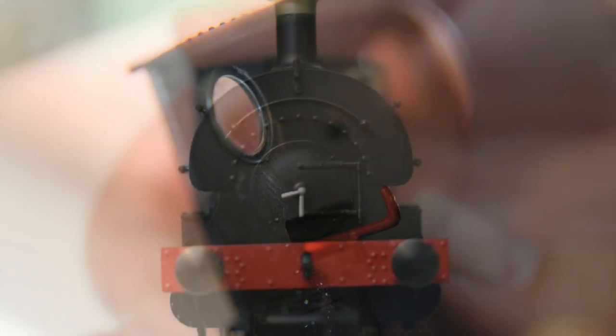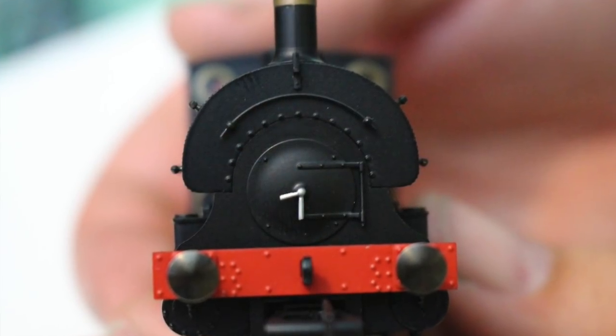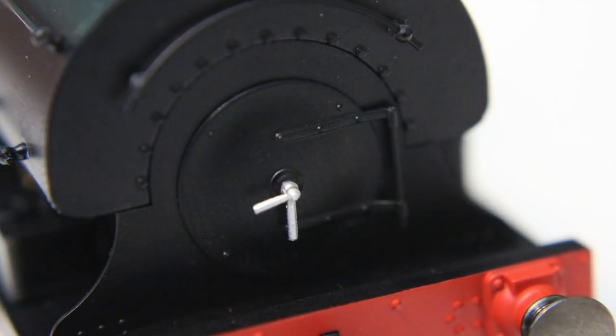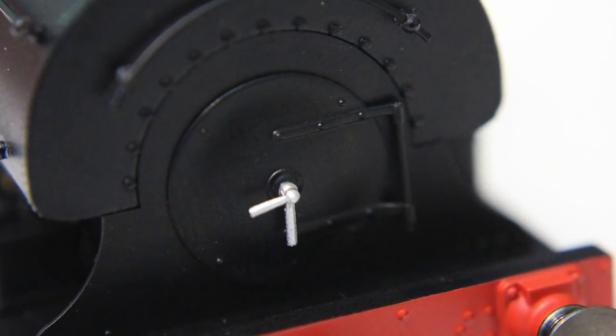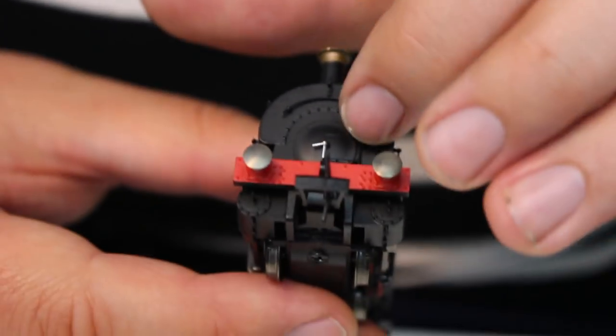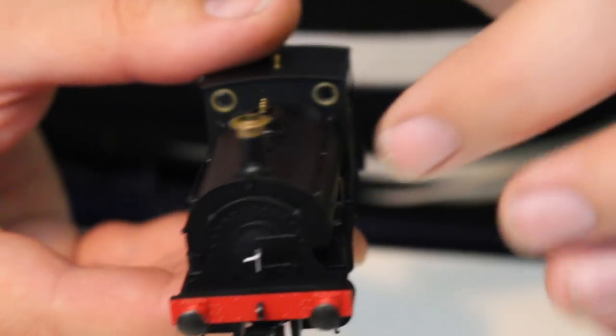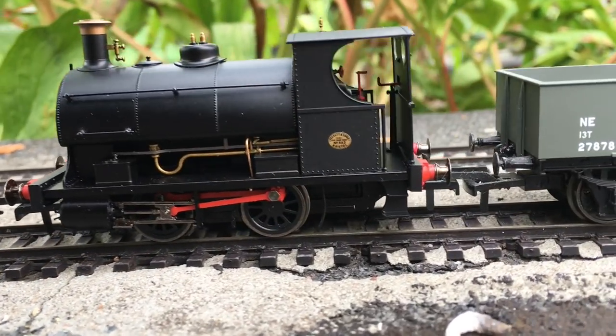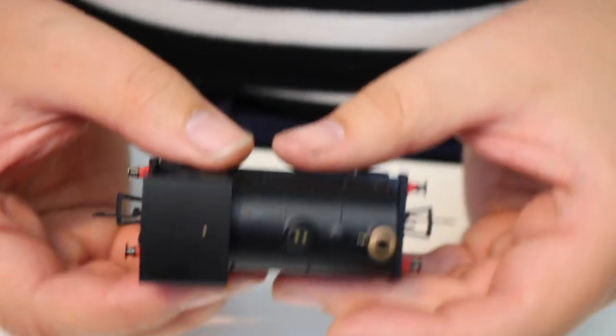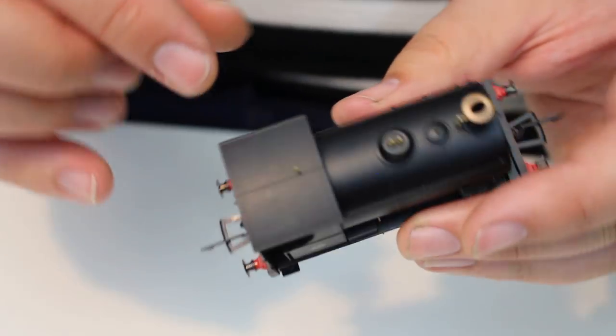The face of the locomotive just as per the previous three is pretty well captured. We've got a separately applied metal smoke box dart and that is separately finished in silver which really does bring this out quite nicely. We've got very crisp rivet detail and all of the handrails there in the boiler are separately applied, very fine wire handrails.